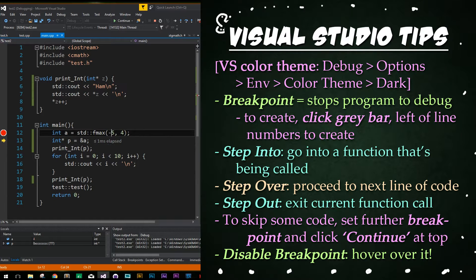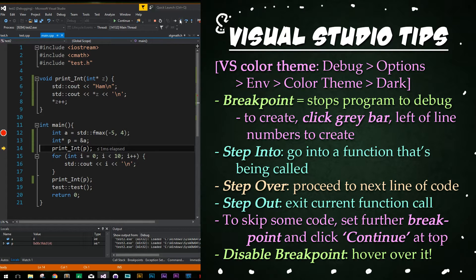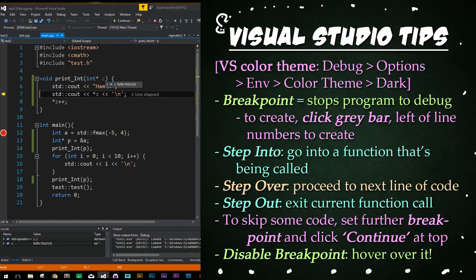If we mouse over p, however — the current line the arrow is pointing to — we'll notice that the pointer p equals some random place in memory. It's not the correct place just yet, because this line hasn't evaluated. If we try to step into, it's not going to actually do anything — it'll pass right over because there's no function being called. However, if we call Step Into on the print_int function here, it will indeed step into the function. We can step over a couple times, and again we can mouse over any variable to see the address for a pointer and the value it's pointing to. If we want, we can simply step out of to get out of this function and have it all evaluate.